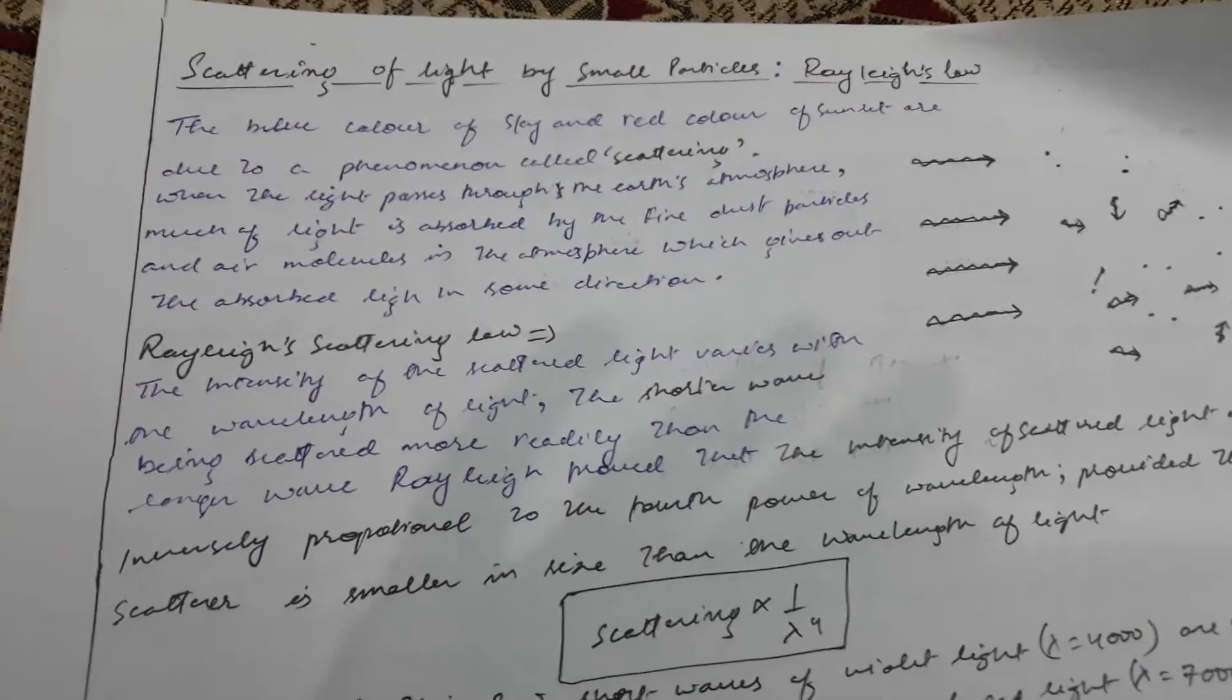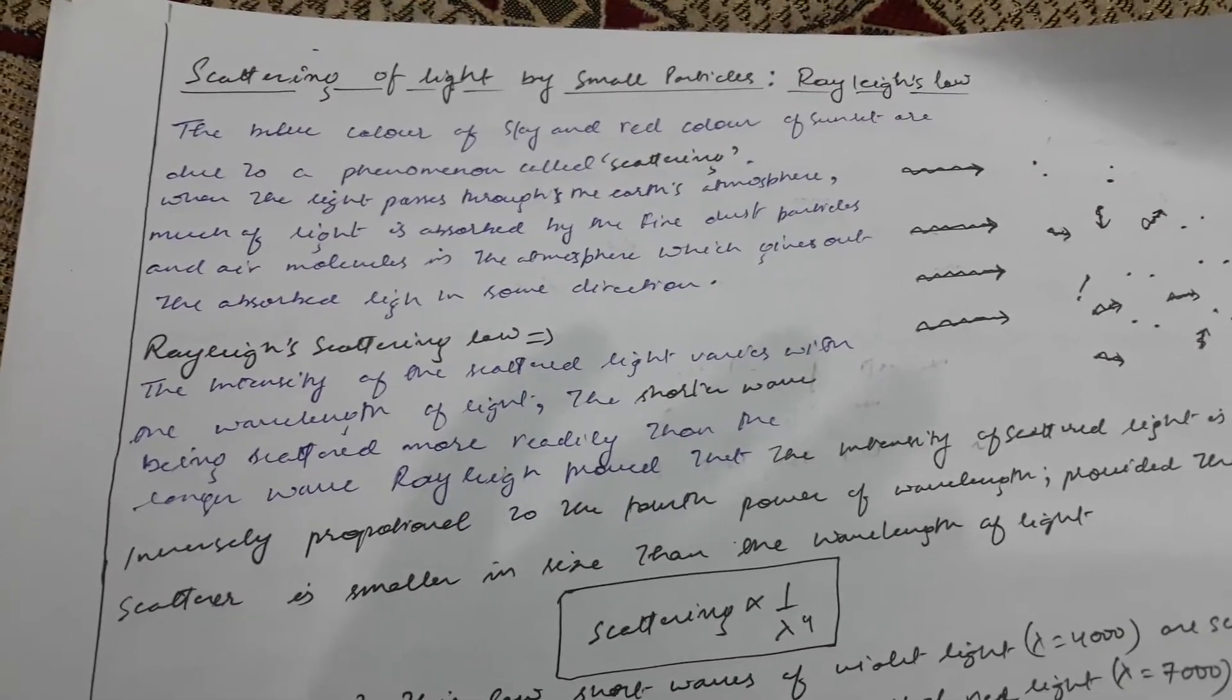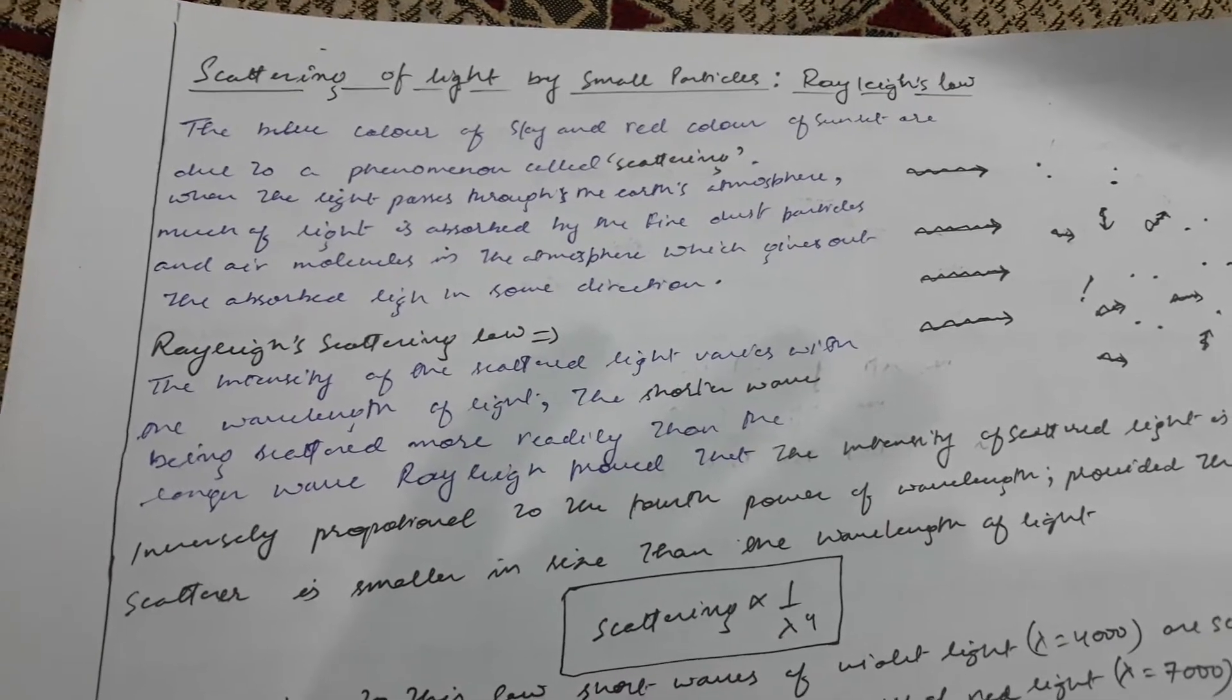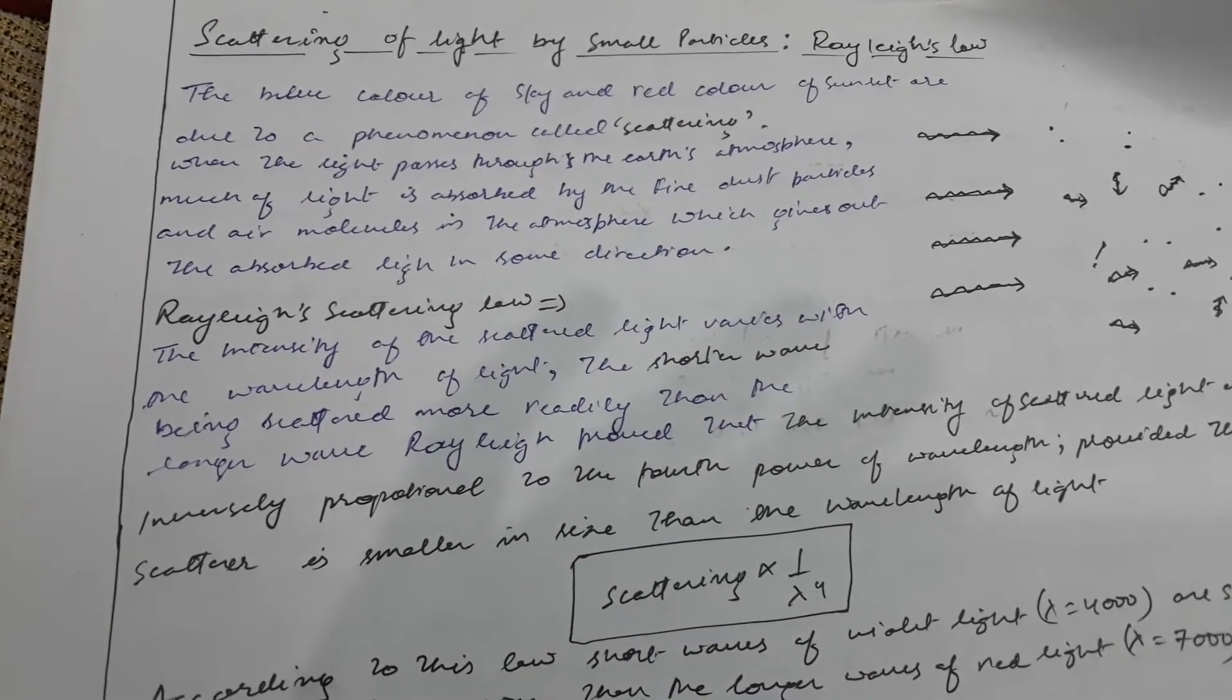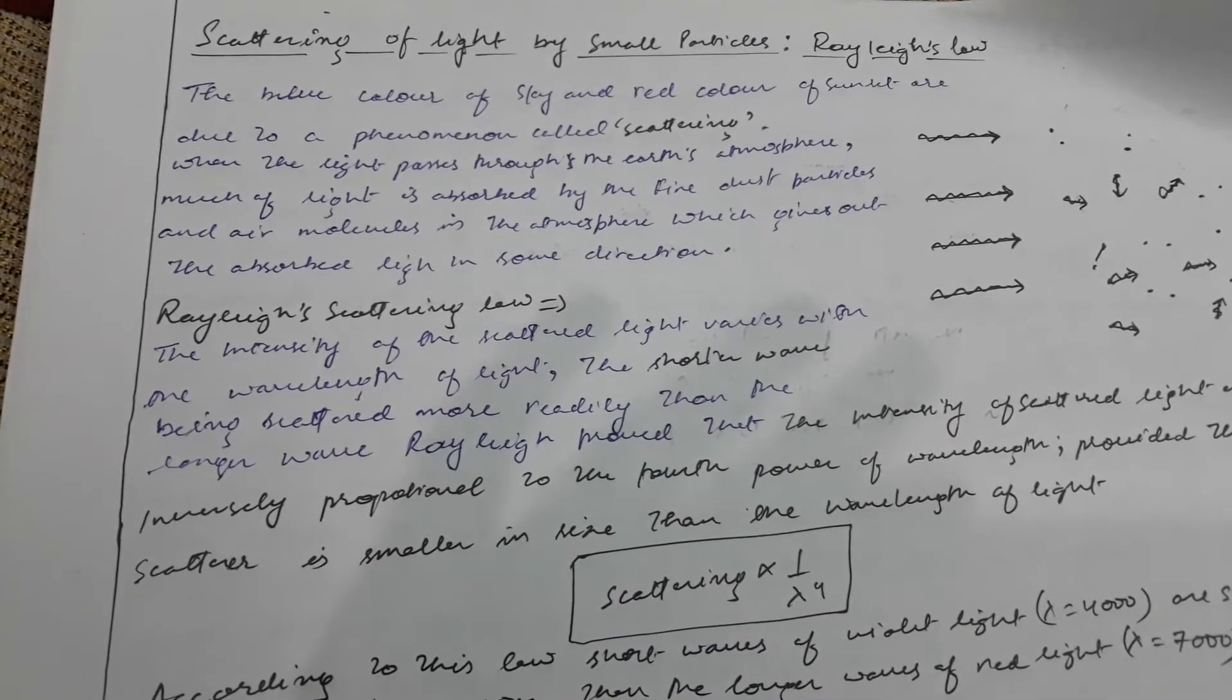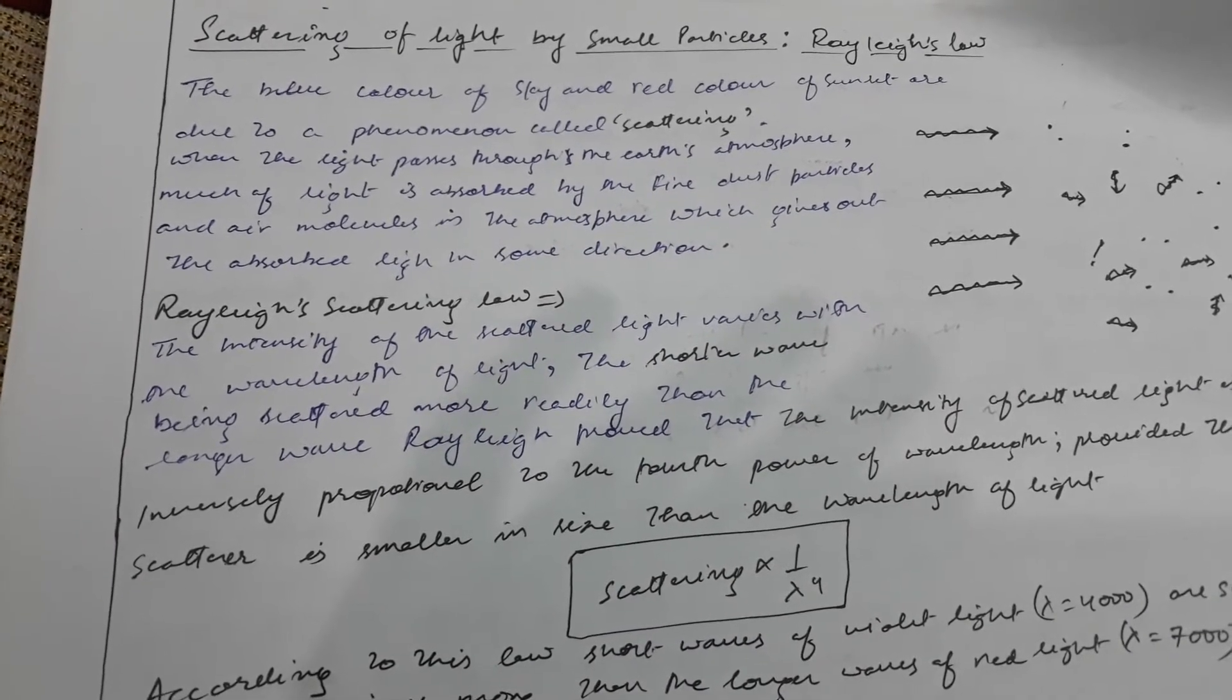Hello everyone. Today we will discuss the scattering of light by small particles, which is also known as Rayleigh's law. The blue color of the sky and red color of sunset are due to a phenomenon called scattering.